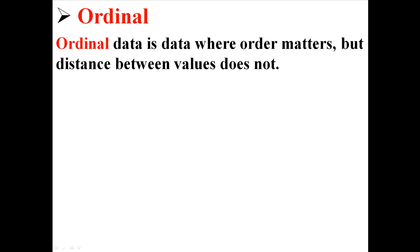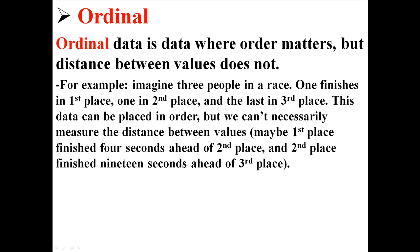Next we have ordinal data. Ordinal data is data where order matters, but the distance between values does not. For example, imagine three people in a race. One person finishes in first, one in second, and the other in third. This data can be placed in order, but we can't necessarily measure the distance between any two values.